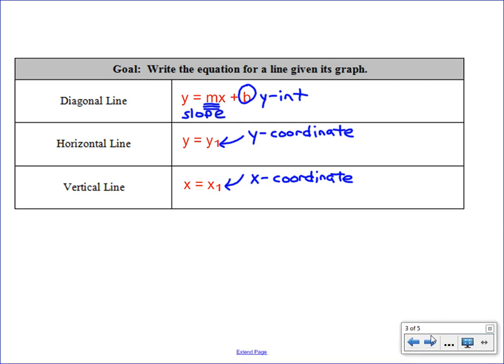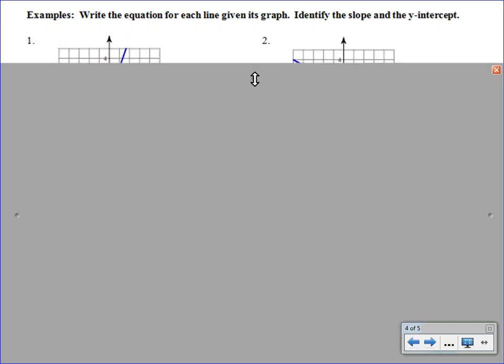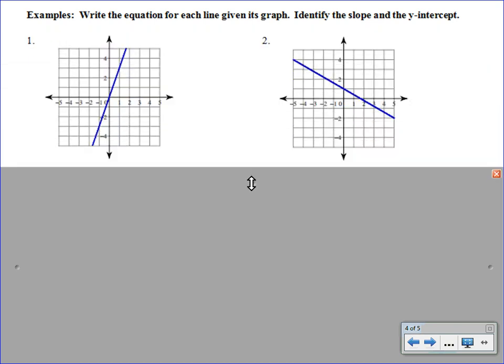All right, let's put this into practice here. Our first two examples are both diagonal lines. So we are going to look at the first line, and we're going to locate two nice points. So just anywhere on the graph, it looks like the point negative 1, negative 3 is a nice point. So we'll mark that. And then another nice point looks to be 1, 3.